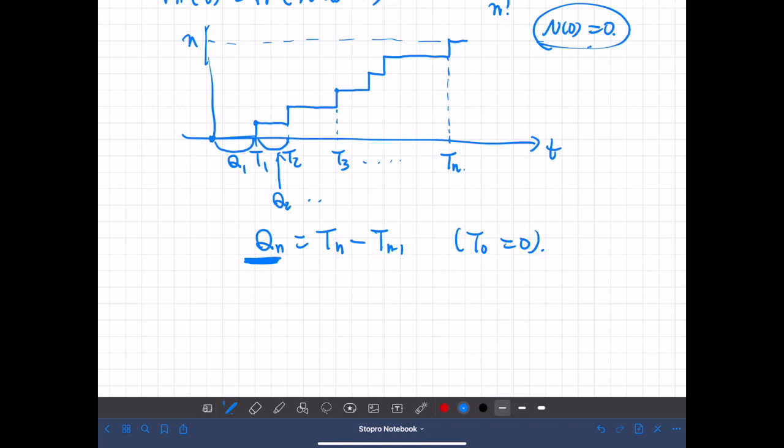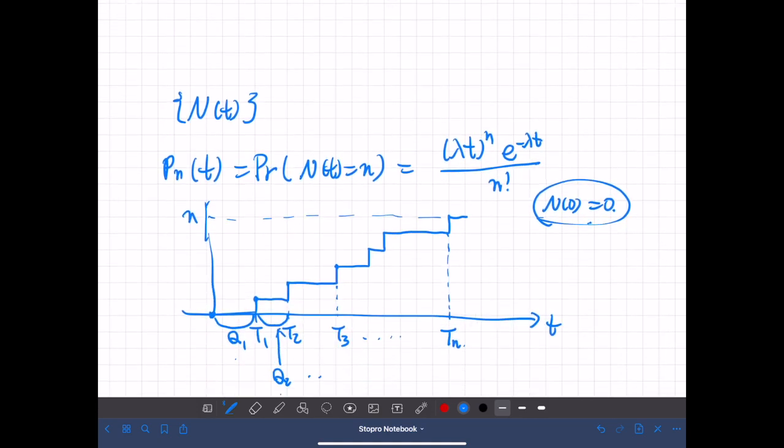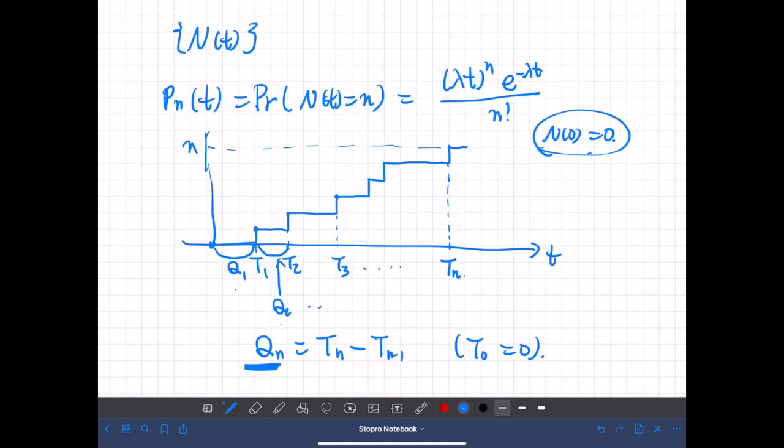First of all, q1, q2, q3, and so on, they actually follow the same distribution. And they are independent. That comes from the fact that this Poisson process is a Markov process.